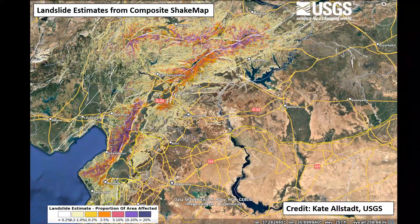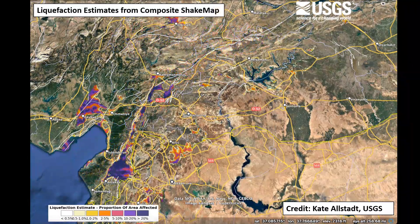It's also important to think about overall response in terms of landslides and liquefaction — that composite ShakeMap allows us to get a better picture of the distribution of landslides as well. Distribution of liquefaction is also driven by the whole sequence contributing to these different effects.